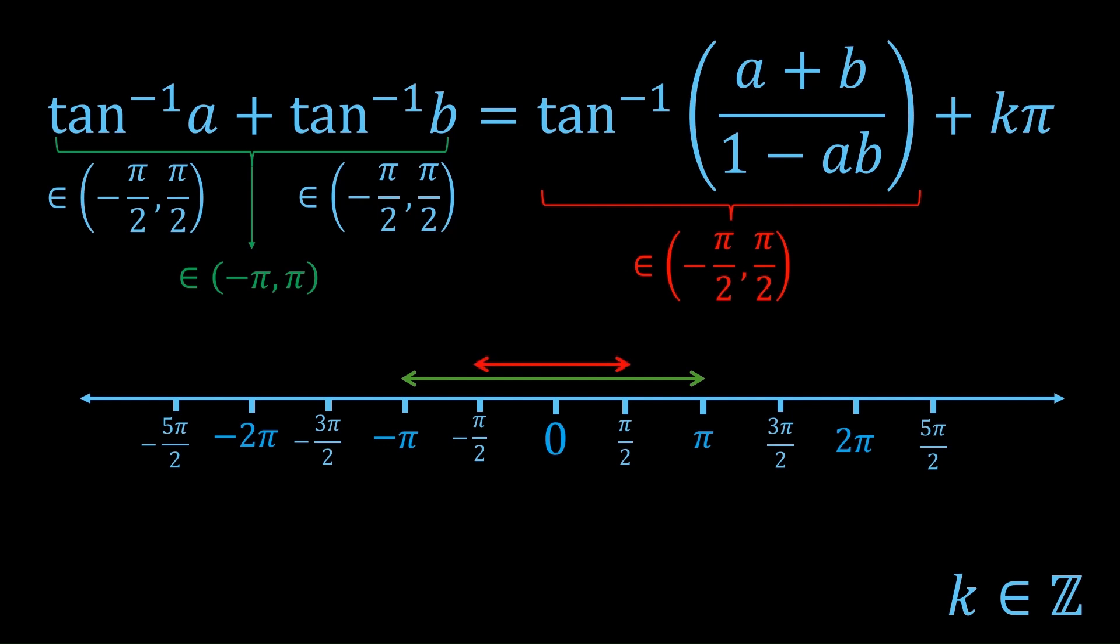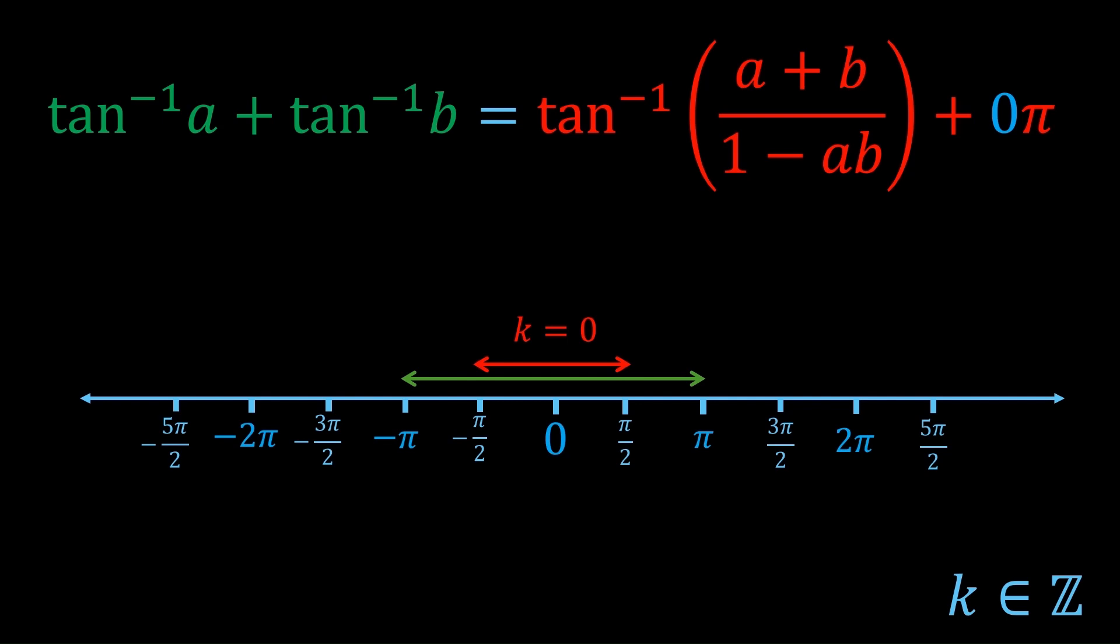Well, the tan inverse in the right hand side is in minus π on 2 to π on 2. And if we take k equals 0, we can have this red arrow representing the right hand side. As you can see, the red and green overlap. So it means that it's possible for the left hand side to be equal to the right hand side if we take k equals 0.